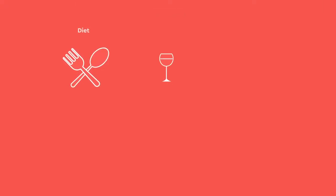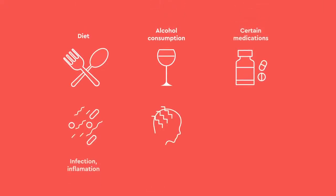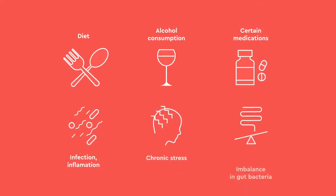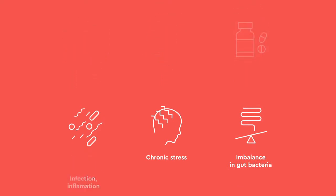So what disrupts the integrity of the gut lining causing leaky gut? They can include diet, alcohol consumption, certain medications, infections, inflammation, chronic stress, and an imbalance in gut bacteria.